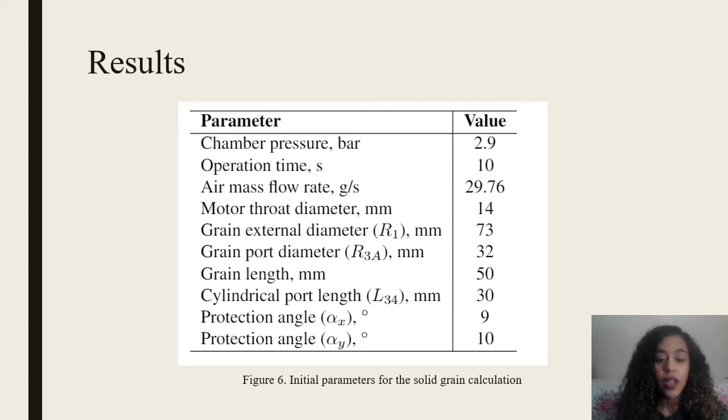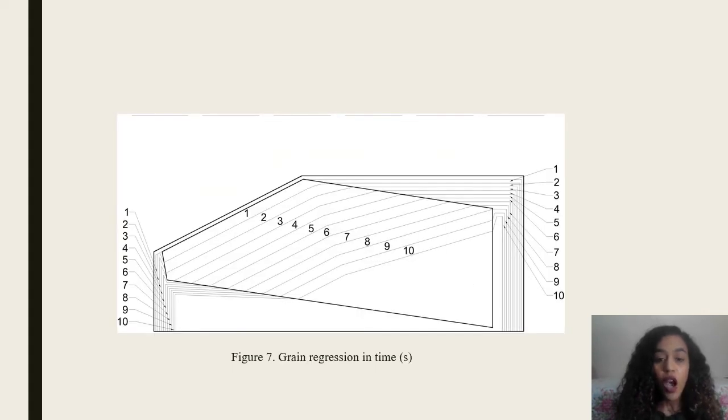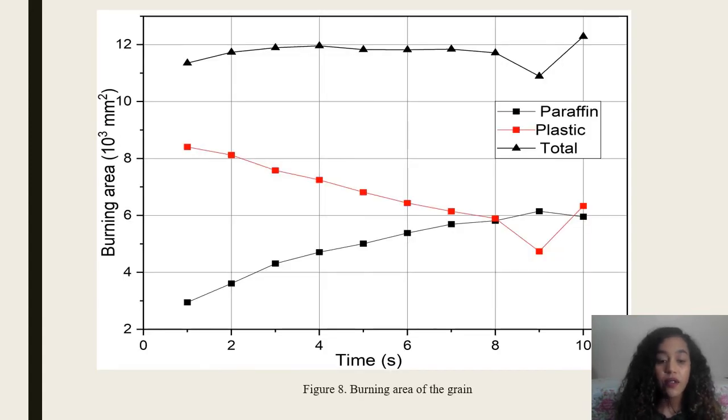Figure 7 shows the results of the grain regression in graphical form. Figure 8 shows the variation of the burning areas in time. As seen from the figure, and according to the model, the plastic protection burns slowly.